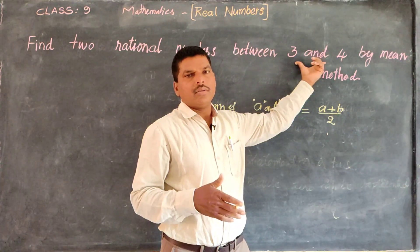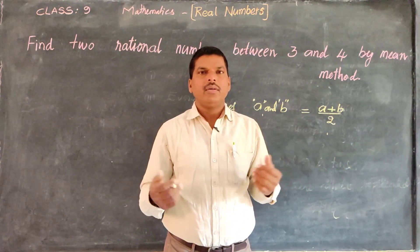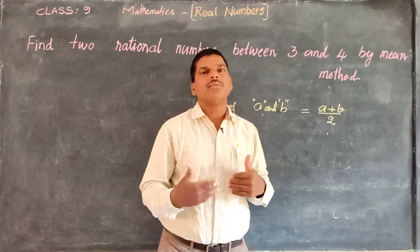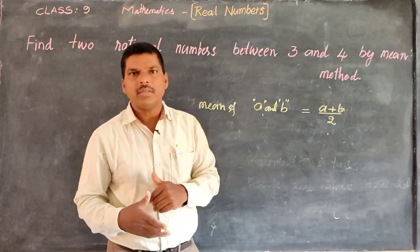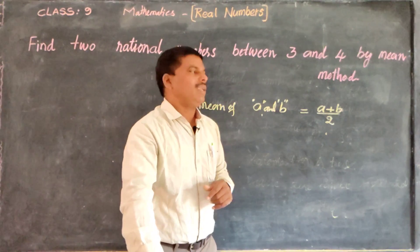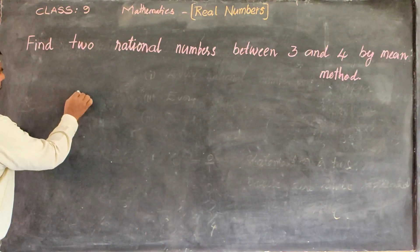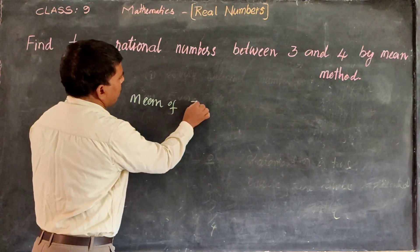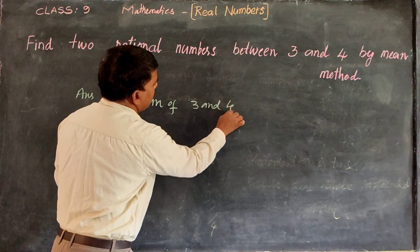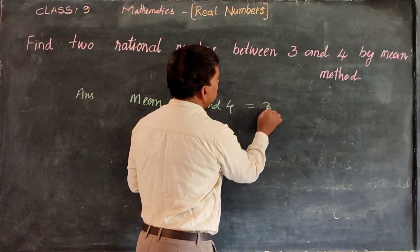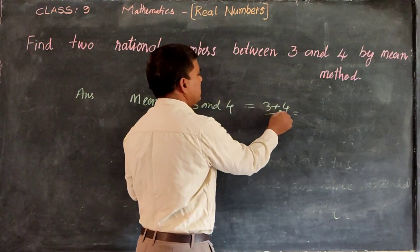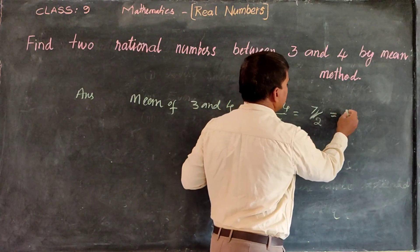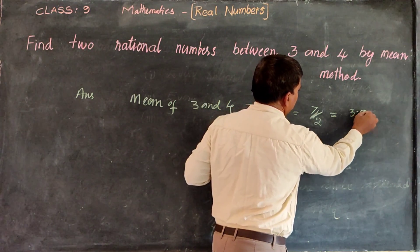We have 3 and 4. So the mean is 3 plus 4 by 2. In this way, we have to find two rational numbers. The mean of 3 and 4 is equal to 3 plus 4 by 2. So 3 plus 4 is 7, so 7 by 2, which is nothing but 3.5.